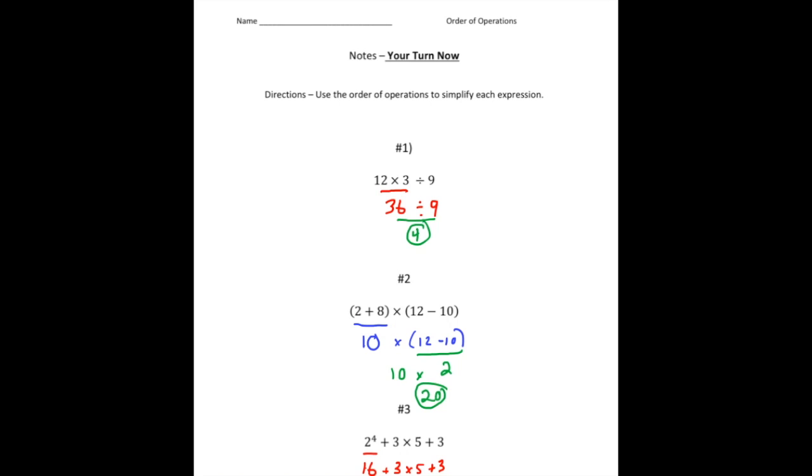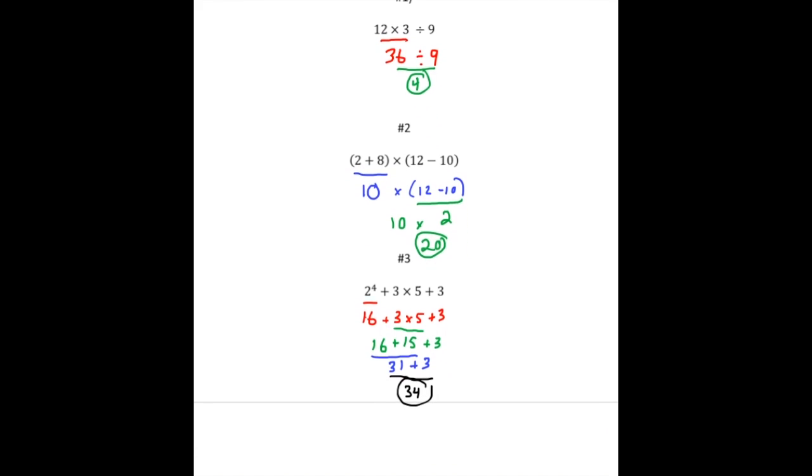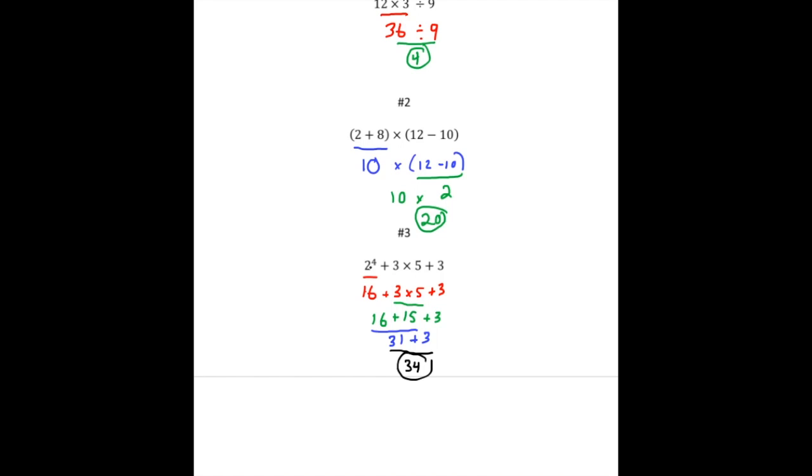But I want to take a minute and just go over the third one, because that's where I've noticed I see most of the mistakes. So here we have 2 to the 4th power plus 3 times 5 plus 3. So again, according to order of operations, we need to do the exponents first. So 2 to the 4th power means 2 times 2 times 2 times 2 which is 16.